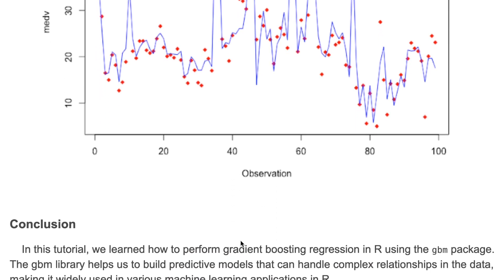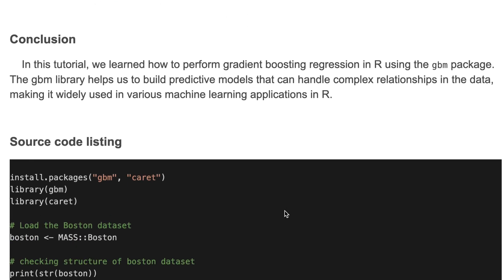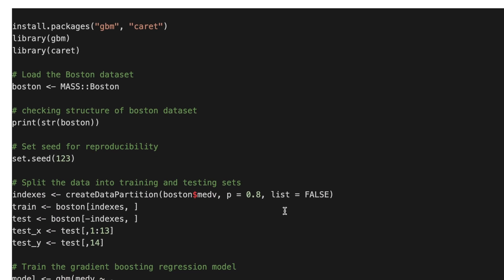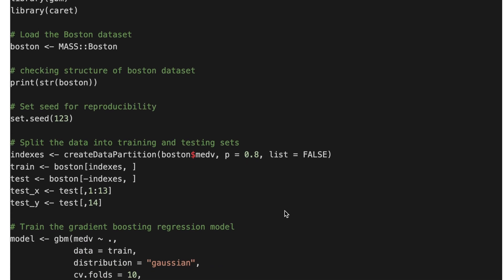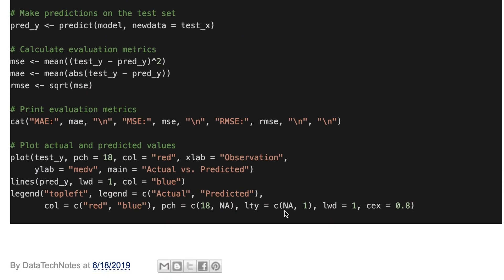That's it for this tutorial. We briefly learned how to perform gradient boosting regression in R using the GBM package. The GBM library helps us build predictive models that can handle complex relationships in data, making it widely used in various machine learning applications in R. The source code link will be in the description. If you like this video, please subscribe to my channel and hit the like button. Thank you for watching and see you next time.